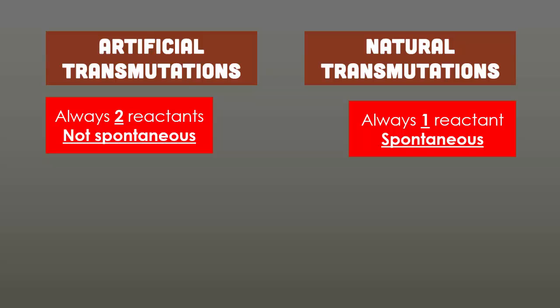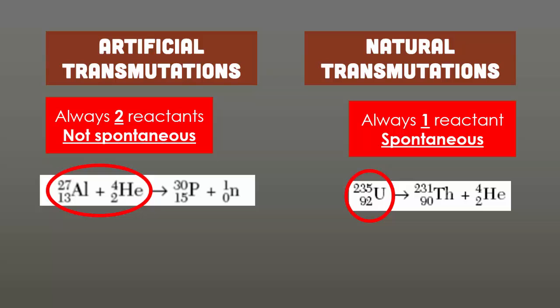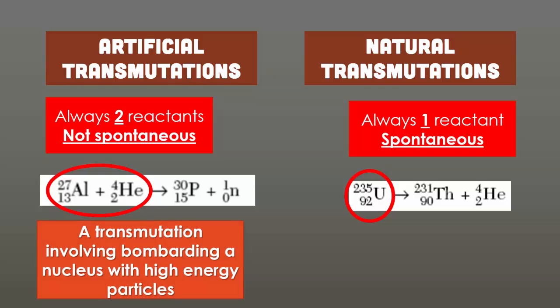When we talk about artificial and natural transmutations, you need to understand what reactants are. Reactants are the starting materials. For artificial transmutations, you will always have two reactants. These are not spontaneous reactions because they require energy. In an artificial transmutation, you are literally bombarding or colliding these two starting materials. If you look at the natural transmutation, it is just one thing decaying over time.